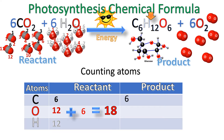Now I'm looking for the hydrogens. The hydrogens are these smaller, kind of gray-looking pieces. Counting those: one through twelve. And again, I'm going to record that data as a 12. Remember, there's a one sitting in front here, so I could have easily just said one times twelve.